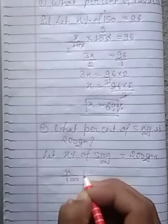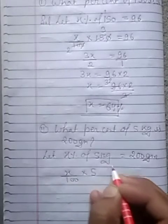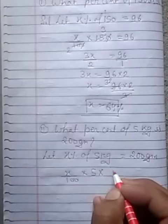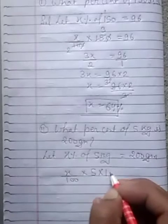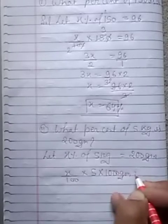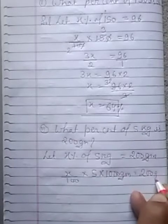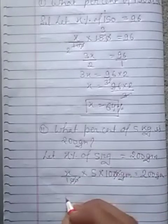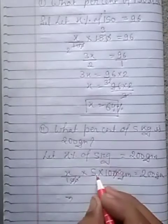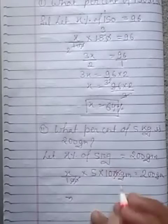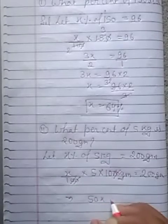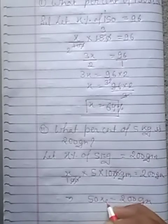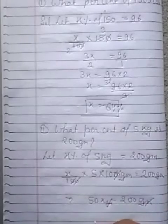So x upon 100 into 5 kg, convert into gram. Multiply by 1000 gram is equal to 200 gram. 0 to 0 cancel. 5 multiply by 10, we get 50. 50x is equal to 200 gram. Gram to gram reduce.